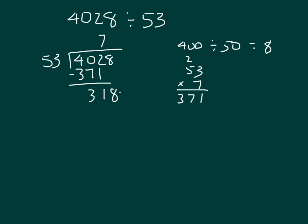Using my estimate again, 53 is still close to 50. And I know that 300 is close to 318, and so 300 divided by 50 is 6. Let's go ahead and try that. 6 times 3 is 18, regroup of 1. 6 times 5 is 30, plus 1 is 31. 318. Subtract, and I have a 0 there. I do not write remainder 0. My answer is 76.